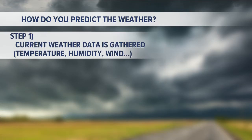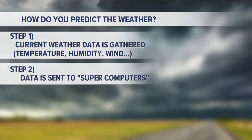Basically, we take current weather data that's gathered from all over the country, all over the world. We take weather stations across the country, also buoys that are out in the ocean that measure water temperatures, weather balloons that are sent up in the air. We can gather data that way. Even airplanes — we can gather data from commercial flights of what's happening up in the atmosphere.